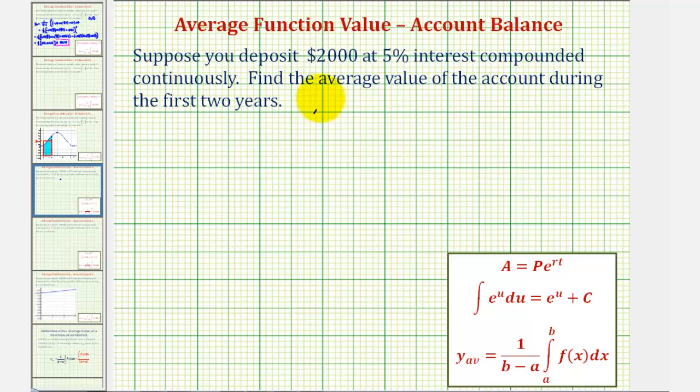So we'd have the function a of t equals the starting amount of $2,000 times e raise the power of rt, where r is 5%, which as a decimal would be 0.05. So we have 0.05 times t as our exponent.